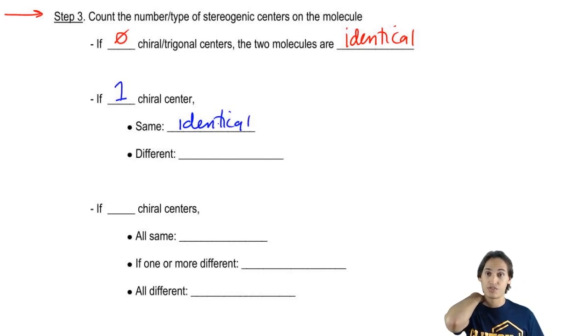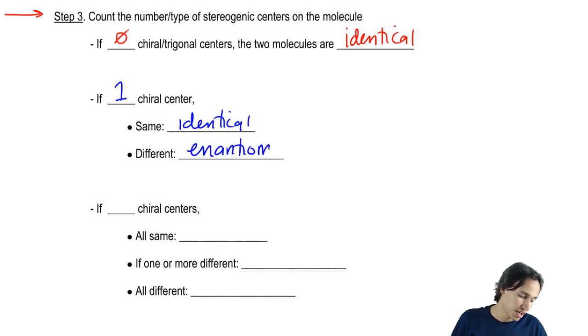If you have different chiral centers for both, then the relationship is going to be enantiomers. And let me illustrate this with the following molecules. Let's say that I have 2-butanol and I have another 2-butanol.